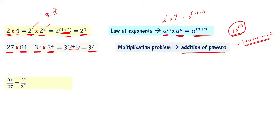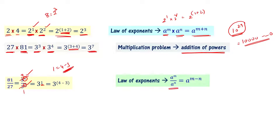For example, 81 divided by 27 is 3 power 4 divided by 3 power 3. The result is 3, which is 3 power 1, that is 3 power 4 minus 3. The law of exponents states: a power m divided by a power n equals a power m minus n.